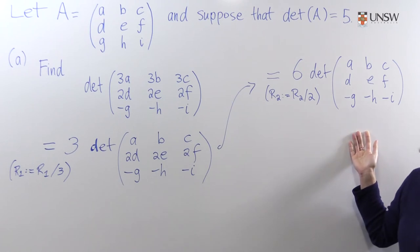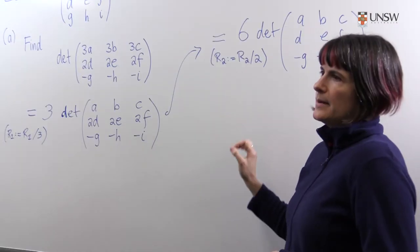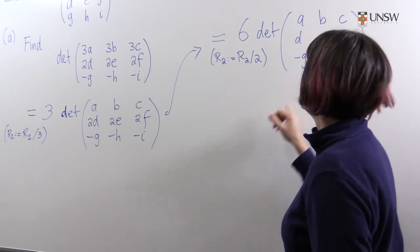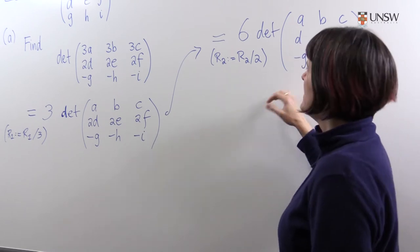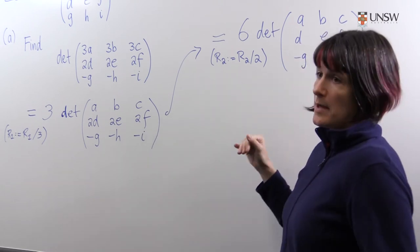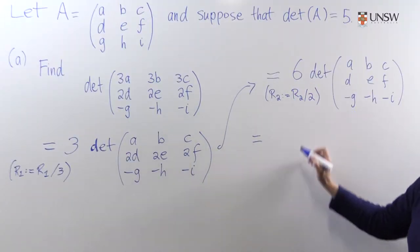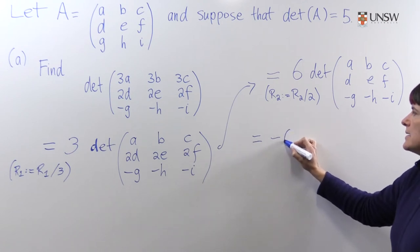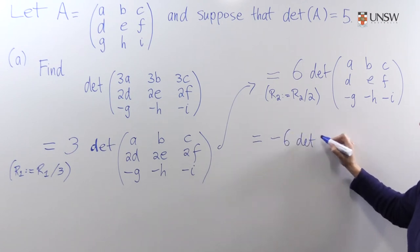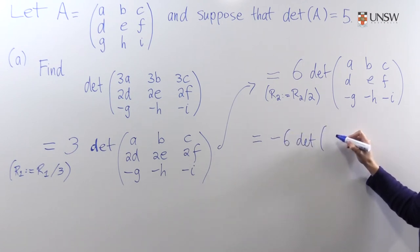So we can see we've almost got A. We just have to multiply the third row by minus one. And when we do this, we will have obtained A. So again, the factor of minus one has to come out the front. And we get minus six determinant of, I could just write A, but maybe I should write it in form.